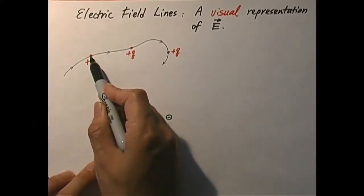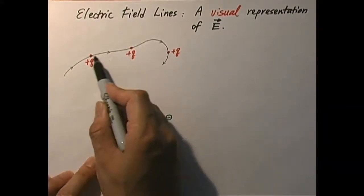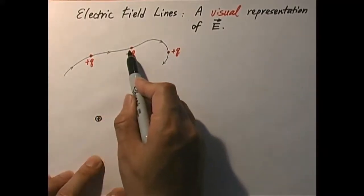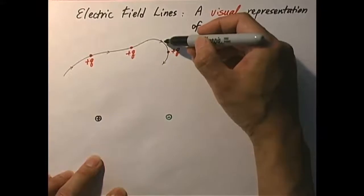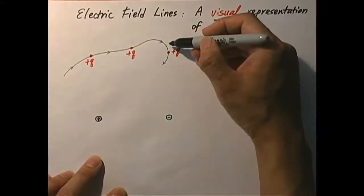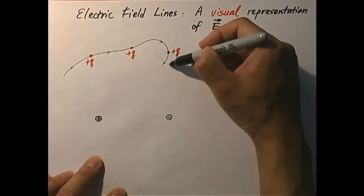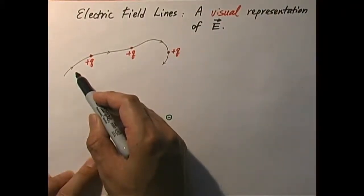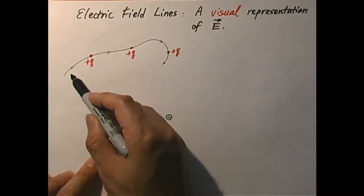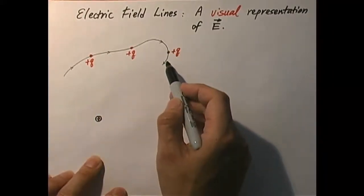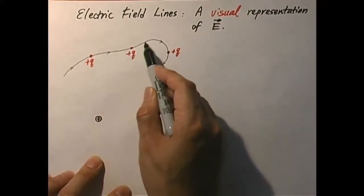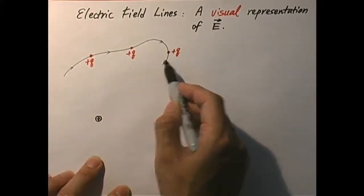Let's say the test charge is here. When I put the test charge here, it experiences a force this way. Next, when I move the charge along that line, the electric field points in a different direction — it experiences the force in this direction, that direction. I can draw what's called an electric field line, where the electric field at every point along that line is tangential to the line.